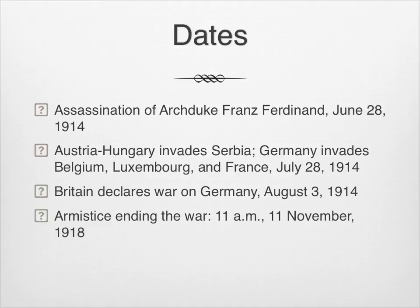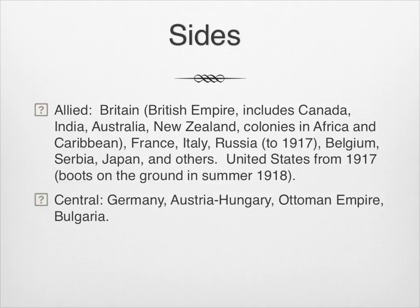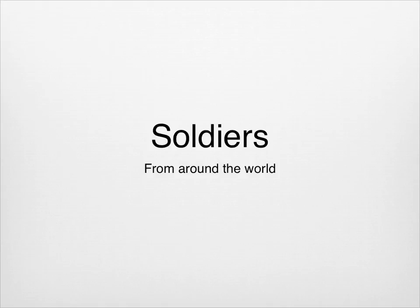This is what Europe looked like during the war. Nations in salmon color are part of the Allies; nations in aqua are part of the Central Powers. The red lines are trench lines, because trench warfare is perhaps the most widely known thing about the Great War. The First World War was truly a global war, although fighting was confined to a few places on the globe. The combatant nations had empires in various locations. In fact, one of the real causes of the war was the combatant nations' desire to shore up and even increase their empires, and they drew soldiers from around the world.